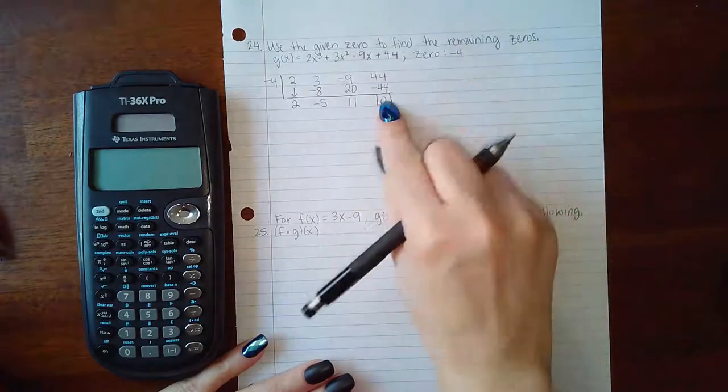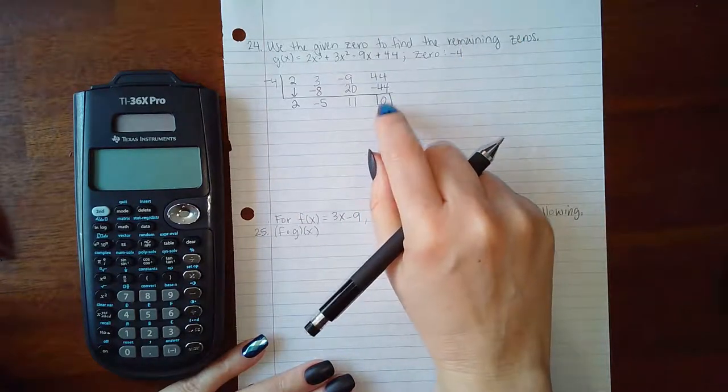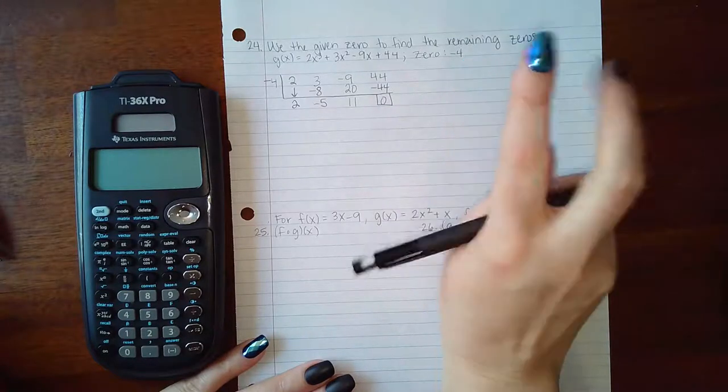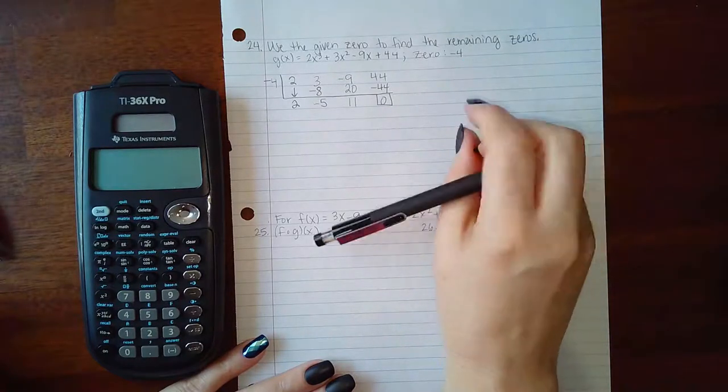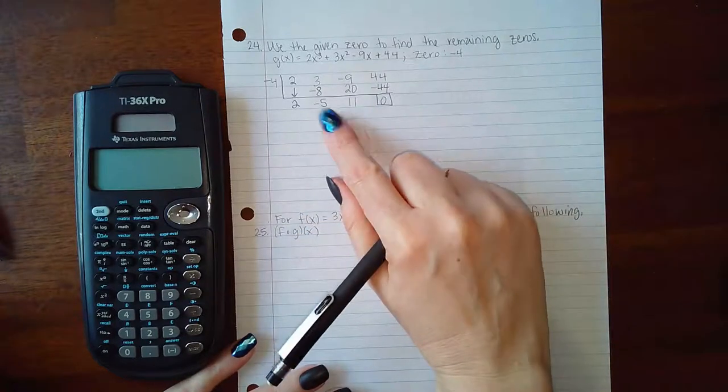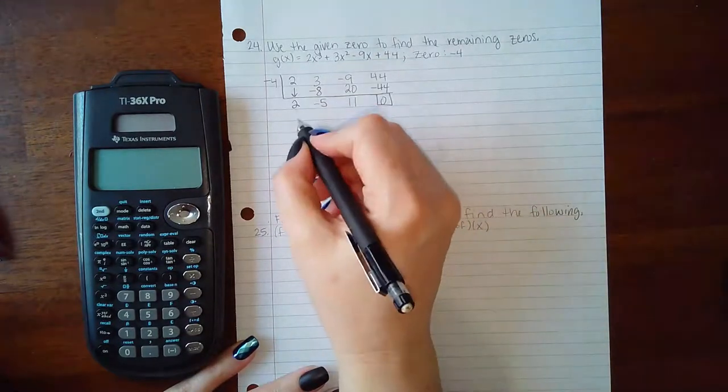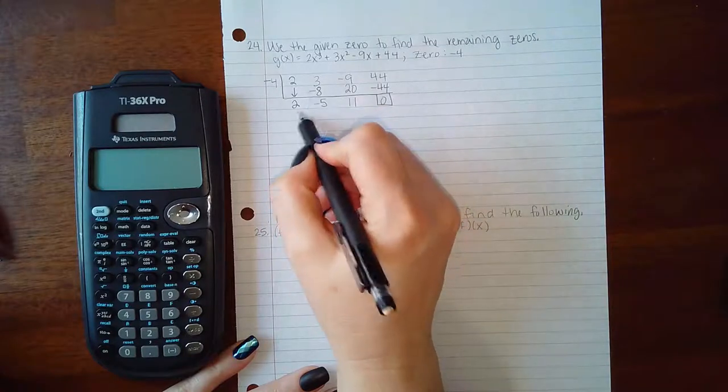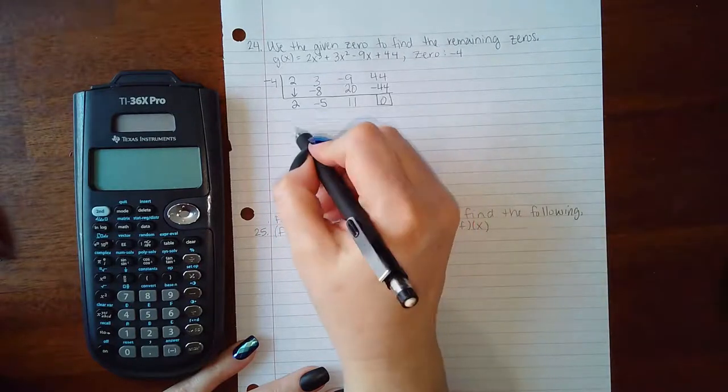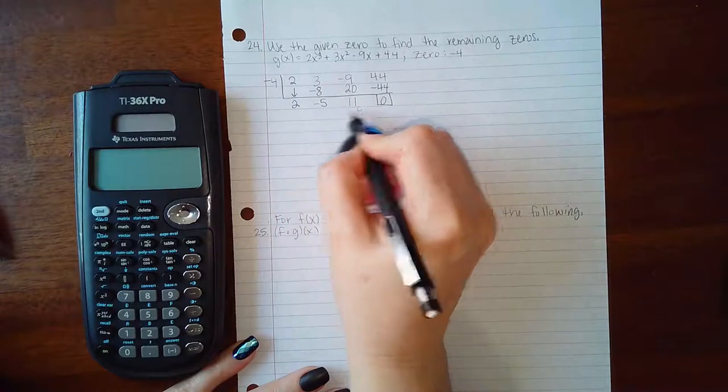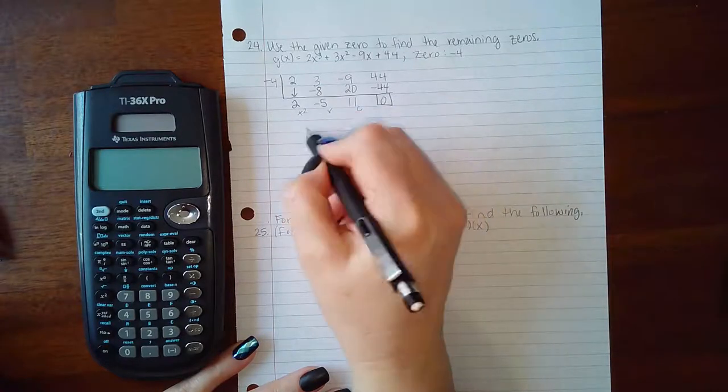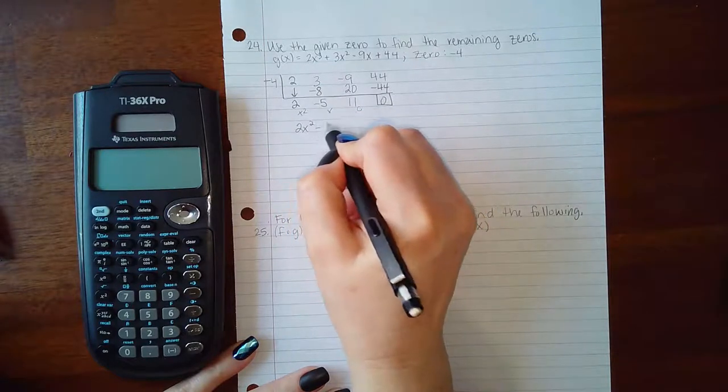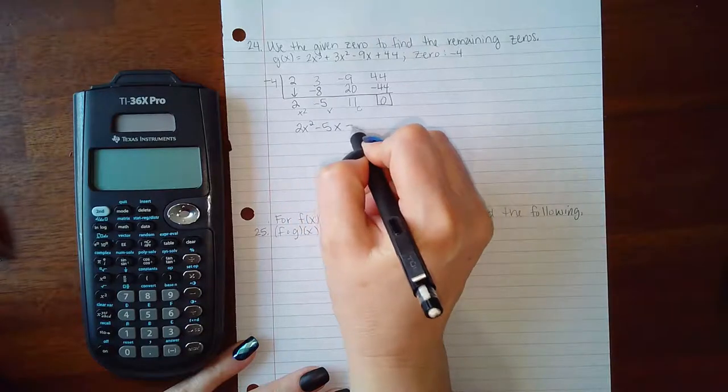And then 44 plus negative 44 is 0. So we got 0 as the remainder which is what we anticipated in order for this to be called a zero. But what we have here left is that we now have this remaining which means this is the same thing as